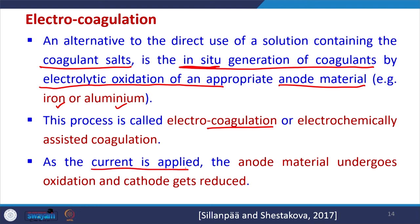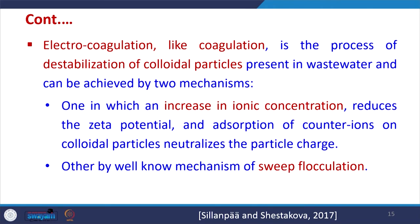As current is applied, the anode material undergoes oxidation and the cathode gets reduced. Electrocoagulation, like conventional coagulation, works by destabilizing the colloidal particles present in the water. Colloidal particles that are not able to settle down can be destabilized: their charge gets reduced. If enough mixing is provided, different colloidal particles come together and form flocs which then settle down. Using the in-situ generated coagulants, the colloidal particles are destabilized in the water.